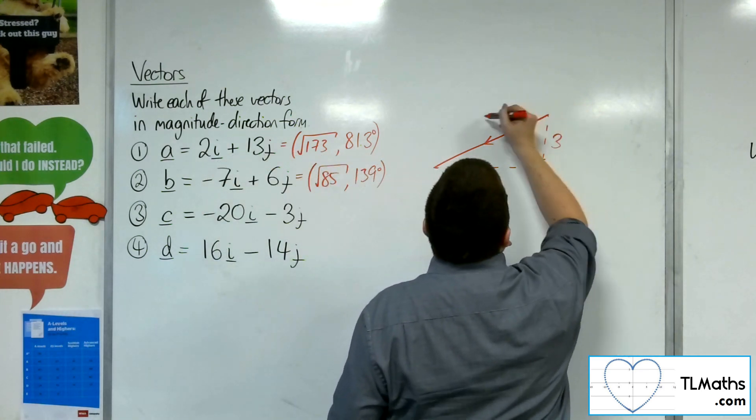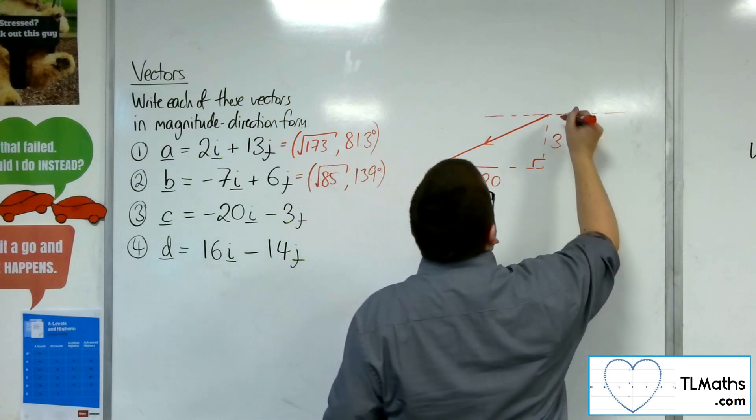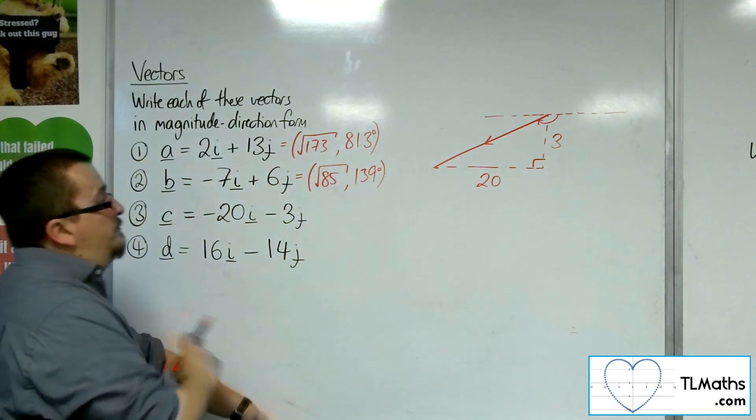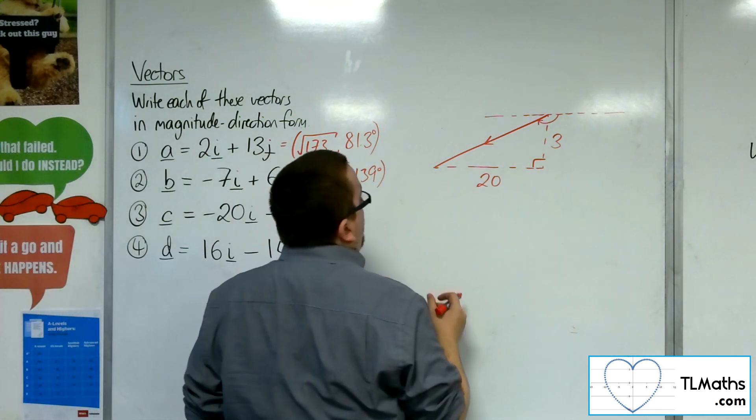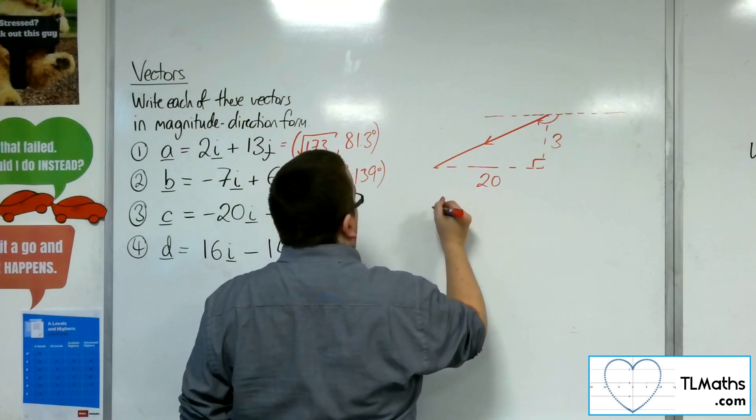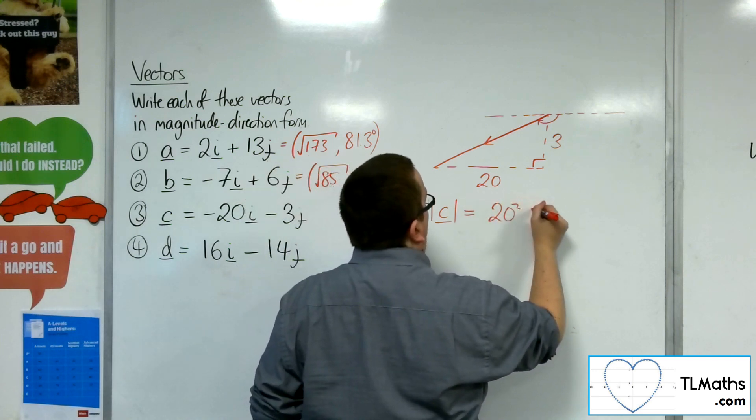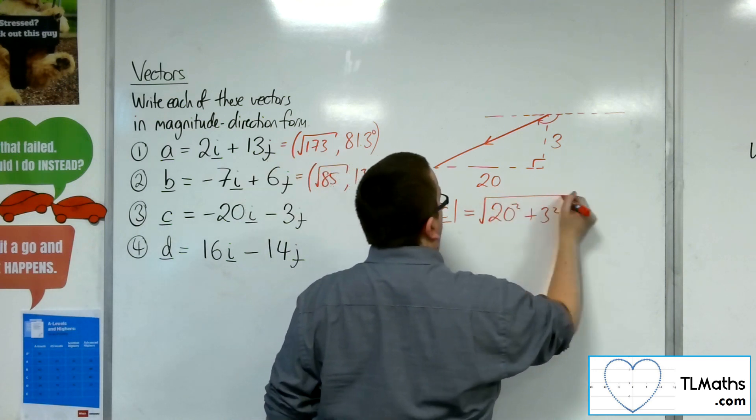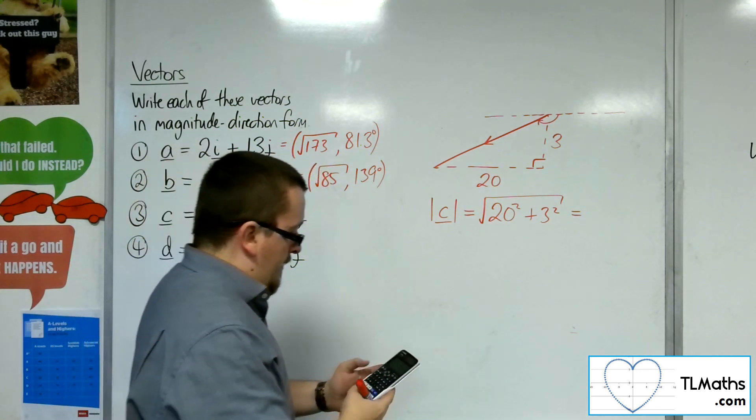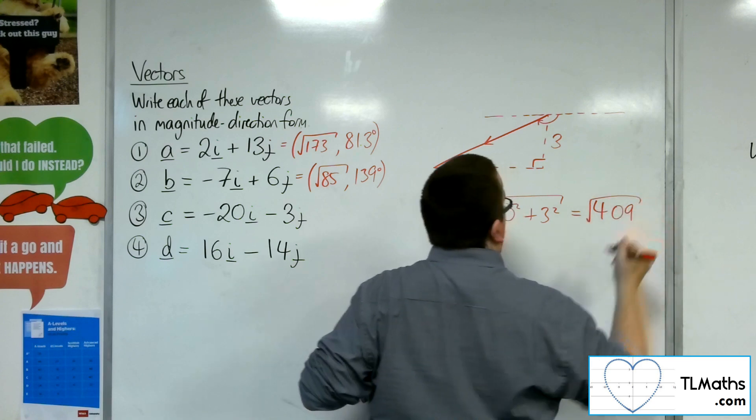Now, as for the x-axis and the direction vector, I'm going to work out that angle there. So, let's consider this. The length of c is going to be the square root of 20 squared plus 3 squared. So, square root of 20 squared plus 3 squared, so square root of 409. That's the magnitude.